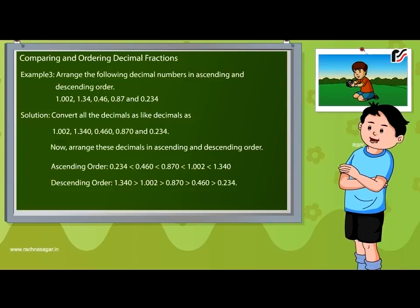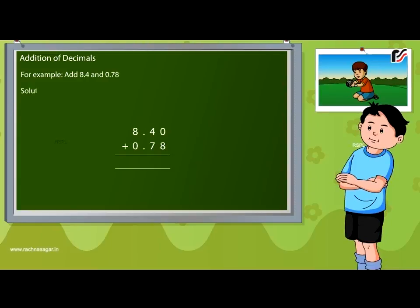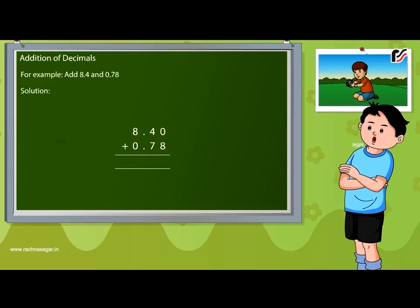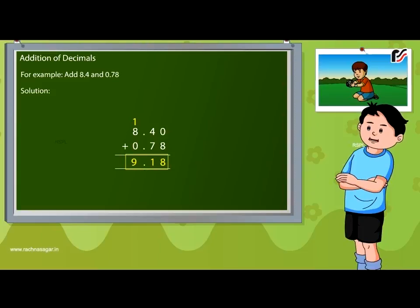Addition of decimals. Example: Add 8.4 and 0.78. First change these decimals into like decimals, then arrange them according to place value and add. The sum is 9.18.